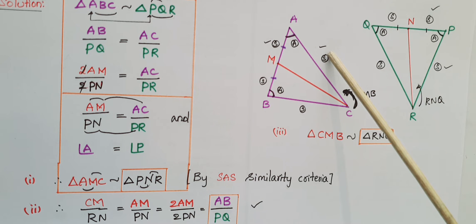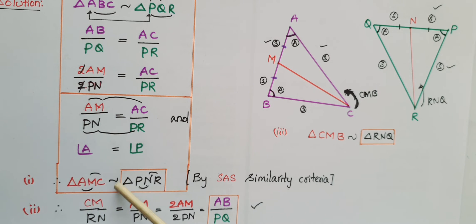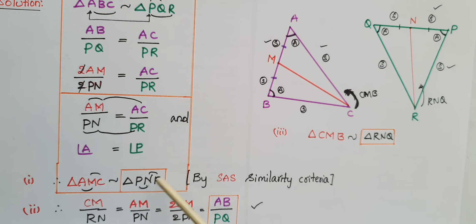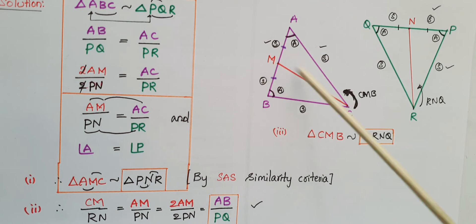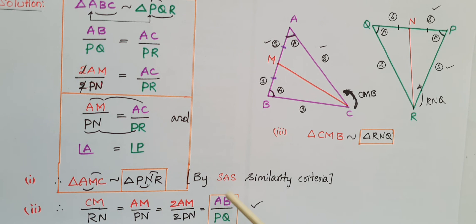By SAS similarity criteria, triangle AMC is similar to triangle PNR — we write it as AMC similar to PNR. For the next question, CM by RN: since CM is a side of triangle AMC and AM by PN are proportional, we can write CM by RN equals AM by PN, which equals 2AM by 2PN, and since 2AM equals AB and 2PN equals PQ, therefore CM by RN equals AB by PQ.